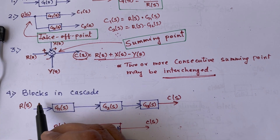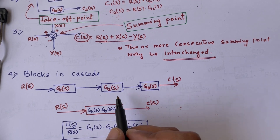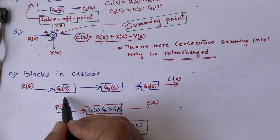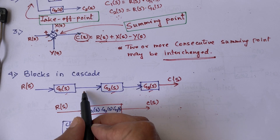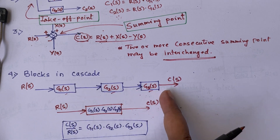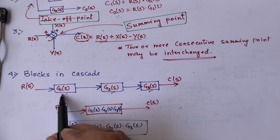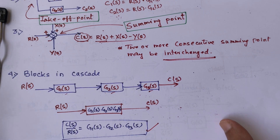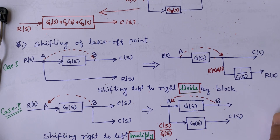The next rule covers blocks in cascade, meaning blocks connected in series. When blocks are in cascade with no other summing point or takeoff point connected in between, the overall transfer function is the multiplication of the individual blocks: G1(s)·G2(s)·G3(s).